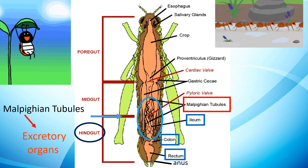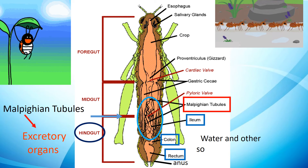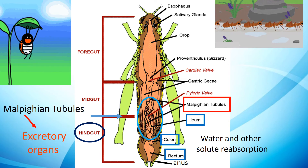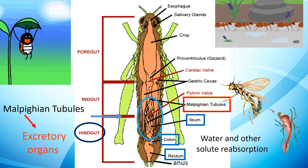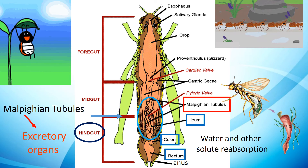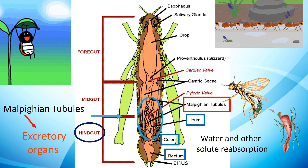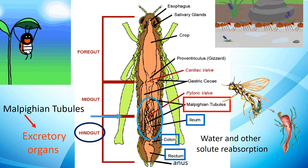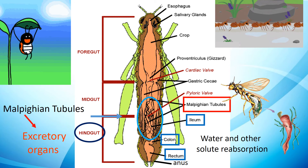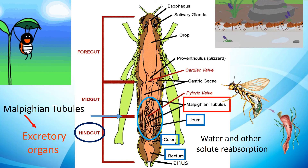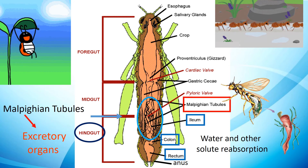The hindgut functions in water and other solute reabsorption. Special cells in the rectum selectively reabsorb water, salts, and other solutes before the remaining material is excreted through the anus. That's all about the digestive system of an insect, and I hope you now have a better understanding of the insect digestive system.